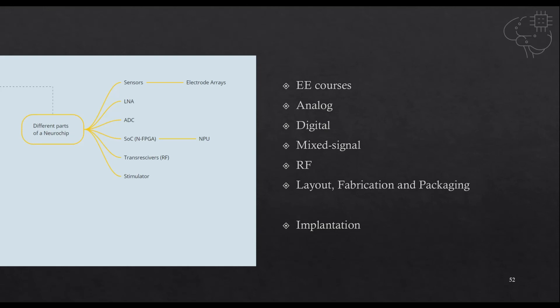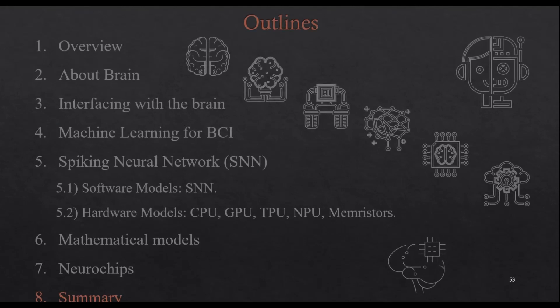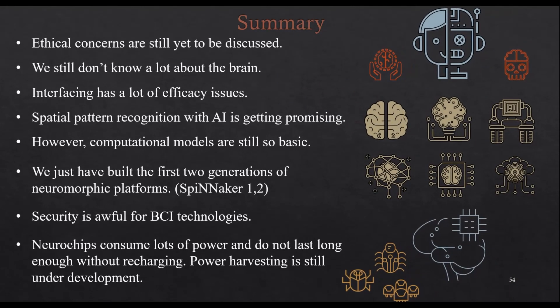All right, that's it. Let's do a summary. So we have the brain but we still don't know a lot about it. Our sensors are good but they need to be biocompatible and their efficacy needs to be higher. Our AI is getting better. Our computational models are not that sophisticated. Our hardware is getting better. Recently the SpiNNaker 2, I think it's gonna be released this year or it's been released 2021.